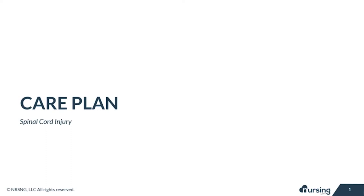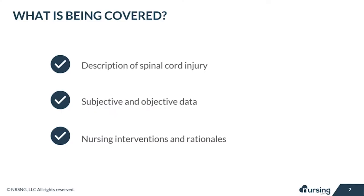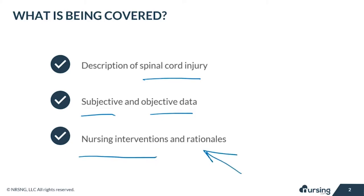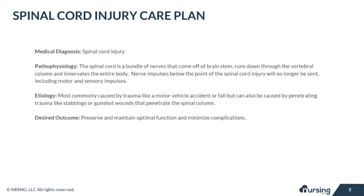Hey guys, today we're going to take a look at the care plan for a spinal cord injury. In this lesson, we'll briefly take a look at the pathophysiology and etiology of a spinal cord injury. We'll also take a look at subjective and objective data that your patient may present with, and any nursing interventions and the rationales for those interventions. Let's jump in.